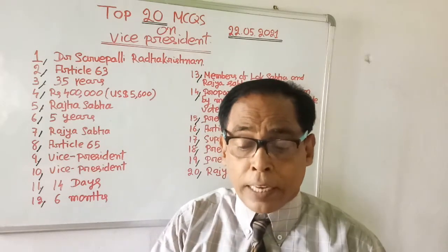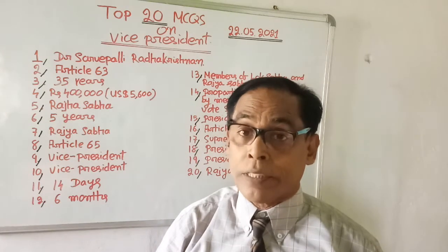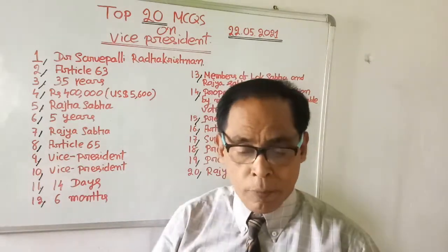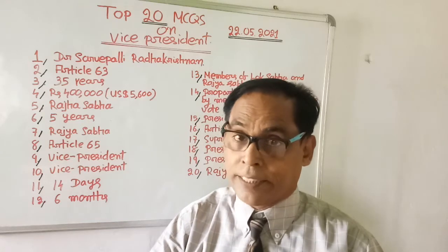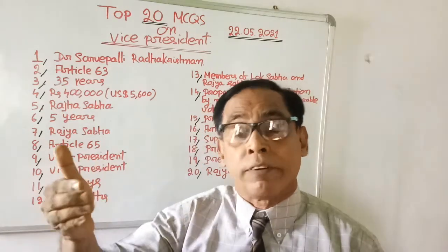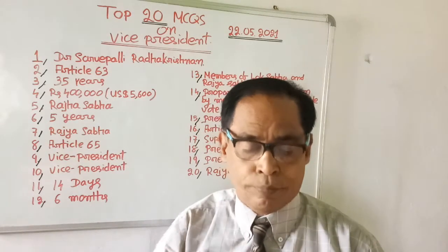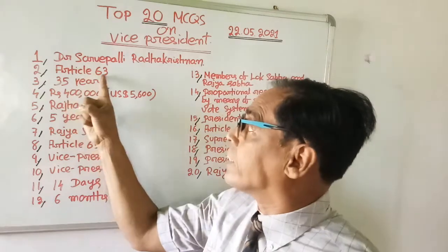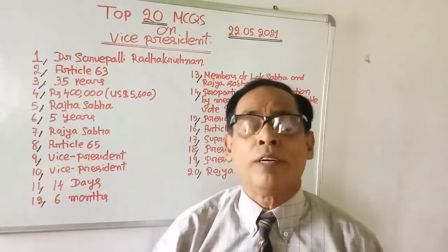The question is: Which article says there shall be a Vice President for India? Choices are Article 64, Article 63, Article 65, and Article 66. The right answer is Article 63. Article 63 speaks that there shall be a Vice President for the country.